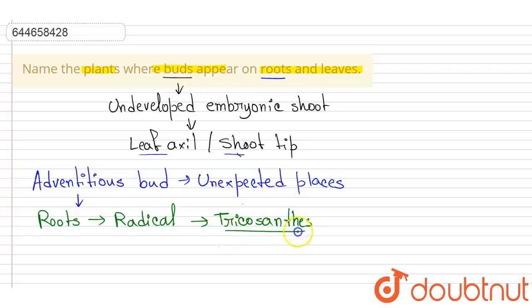Trichosanthes. They appear on the leaves, and an example of such epiphyllous buds can be found in the Bryophyllum species.